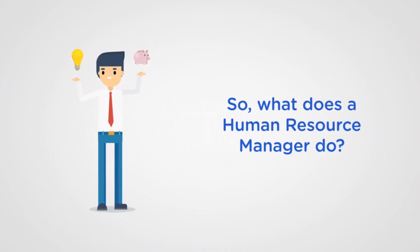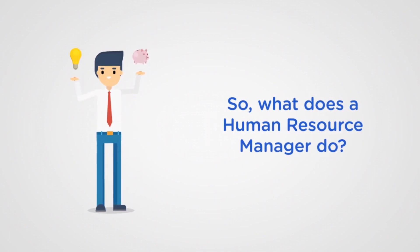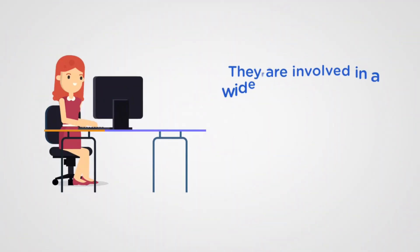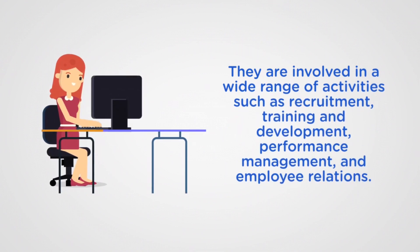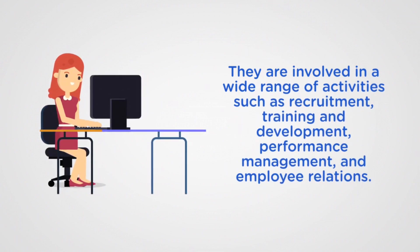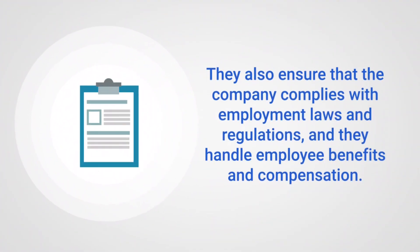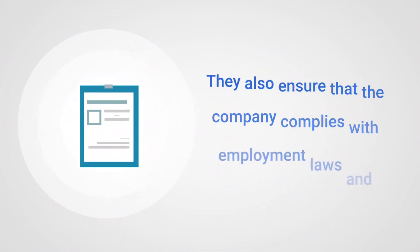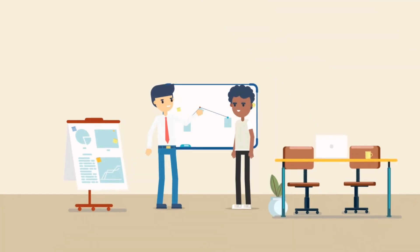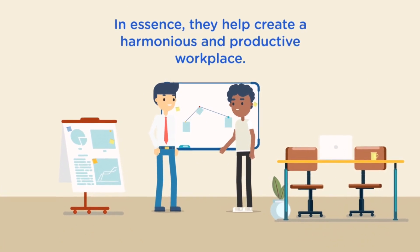So, what does a human resource manager do? They are involved in a wide range of activities such as recruitment, training and development, performance management, and employee relations. They also ensure that the company complies with employment laws and regulations, and they handle employee benefits and compensation. In essence, they help create a harmonious and productive workplace.